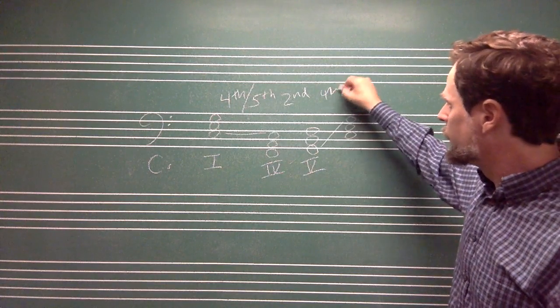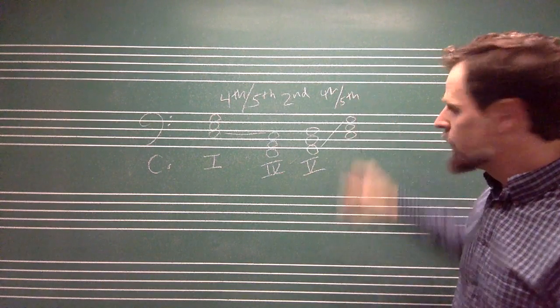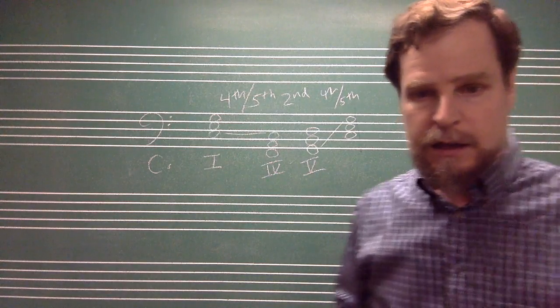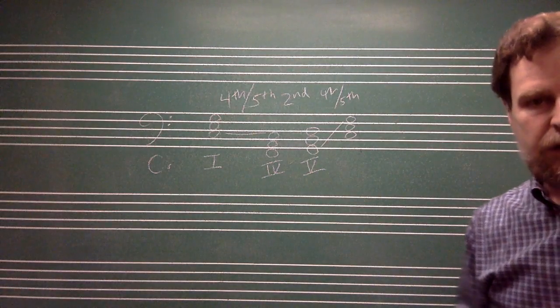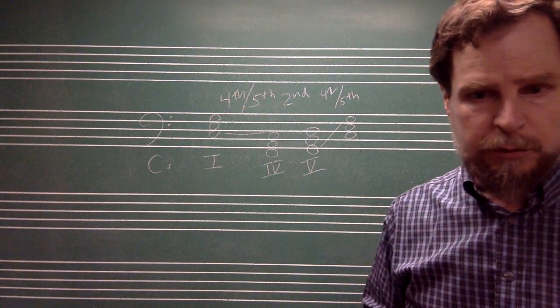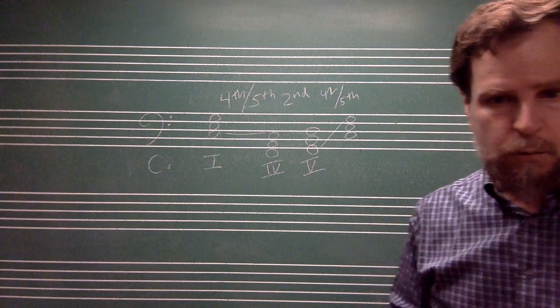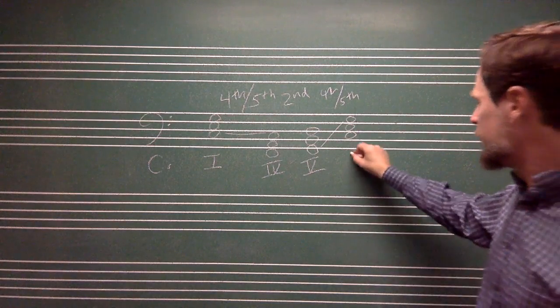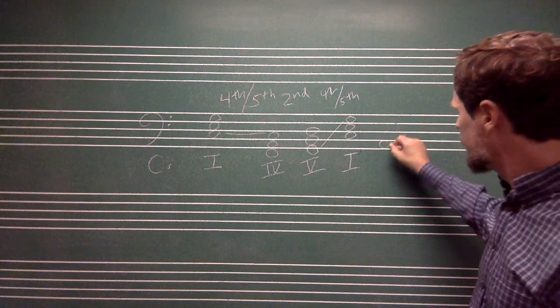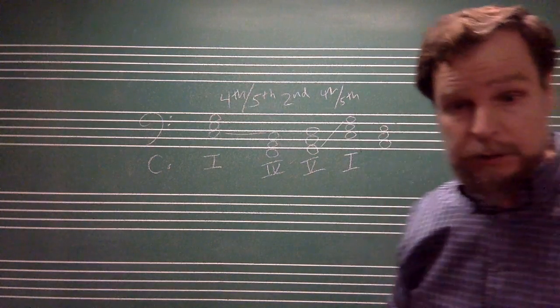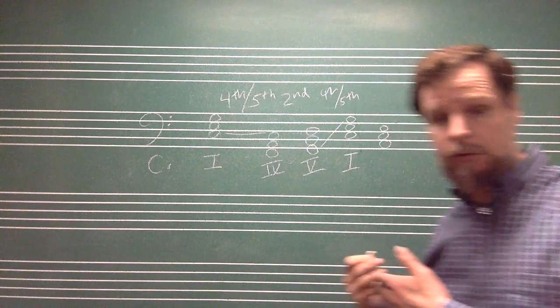So this is fourth, fifth. And then the last kind of root movement is root movement by third. So I'm going to go from that one chord to a six chord, which means that we move down a third.